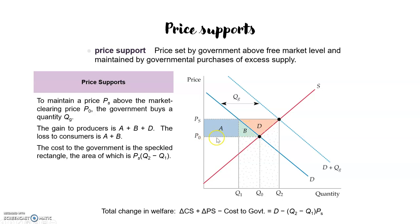When the market clearing price p0 and quantity q0 were set in a competitive market, the consumer surplus was the triangle above p0 and below the demand curve. Now that the price is PS, the consumer surplus is a smaller triangle above PS and below the demand at q1. The consumers have lost areas a and b.